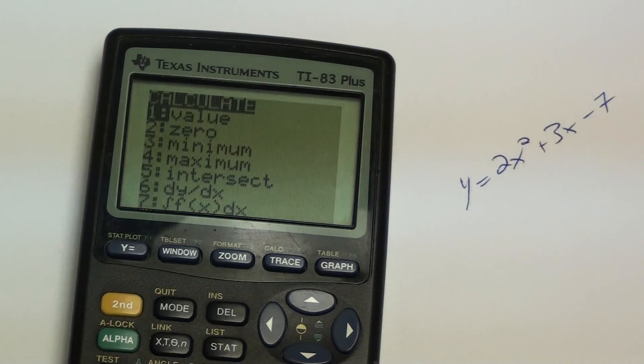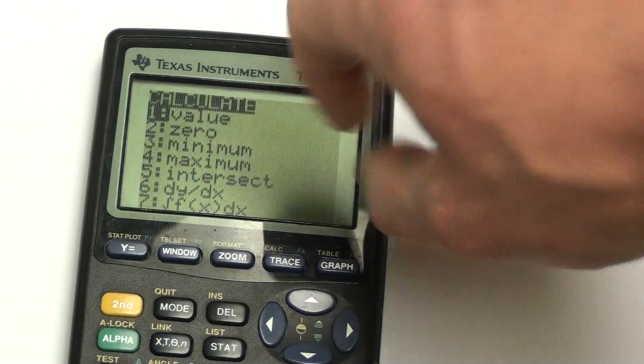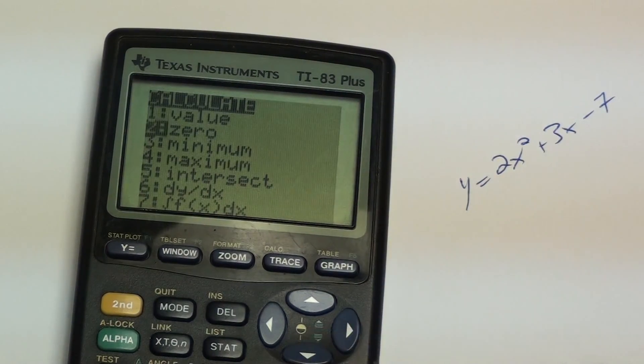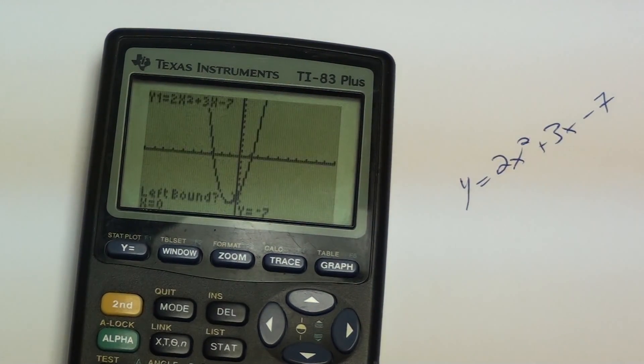X-intercepts, roots, zeros. Option two is for zeros. That's what I want to go to. I'll go down to number two, hit enter. Now it's going to ask you a series of questions.